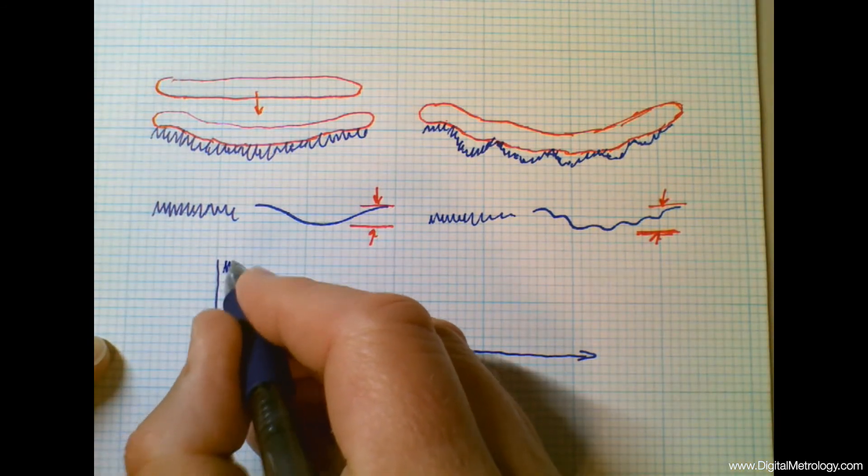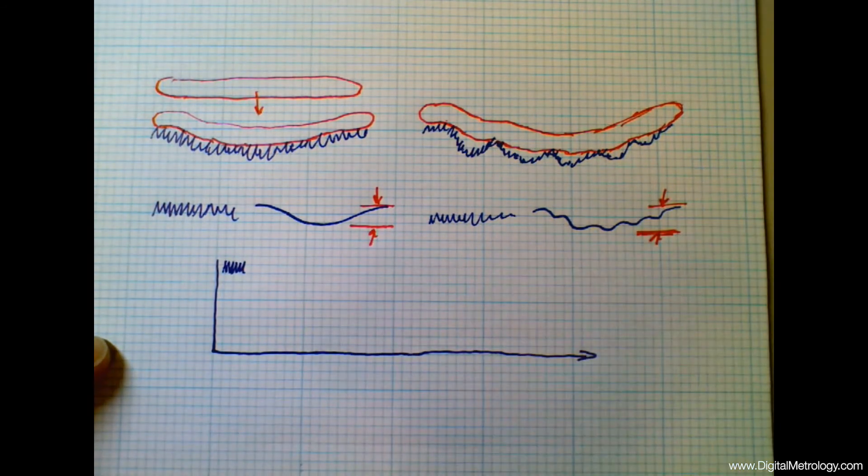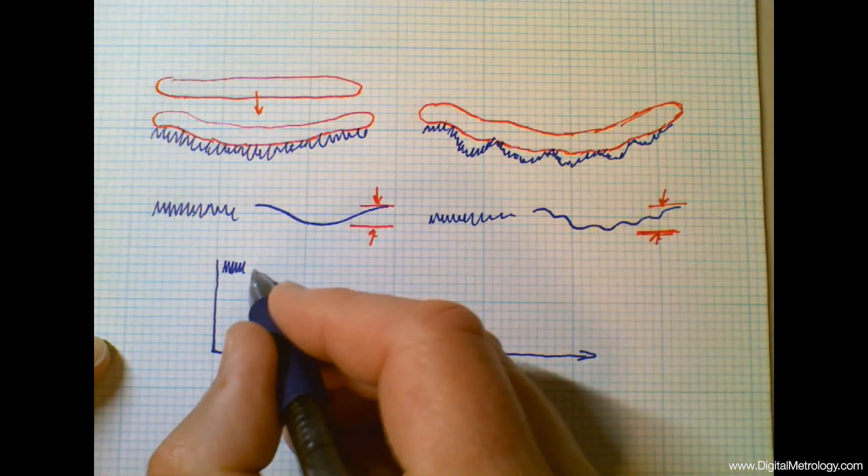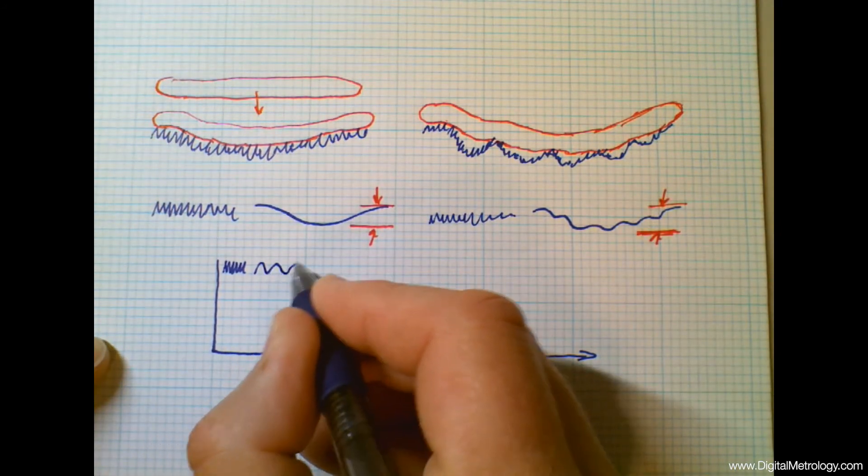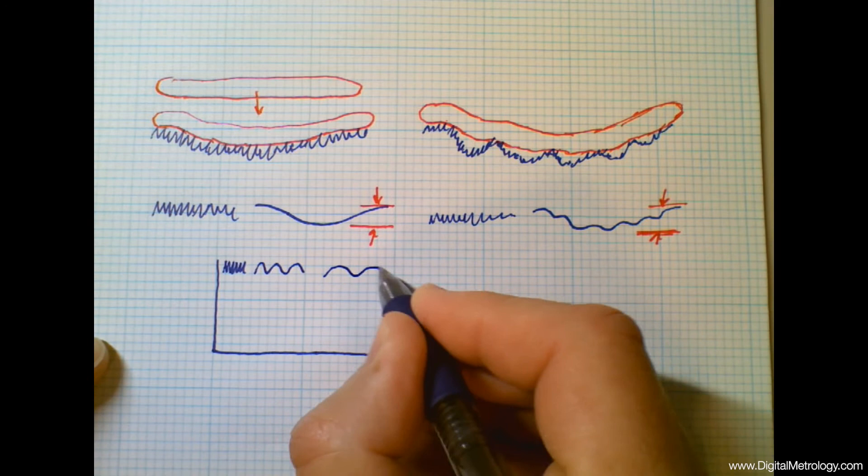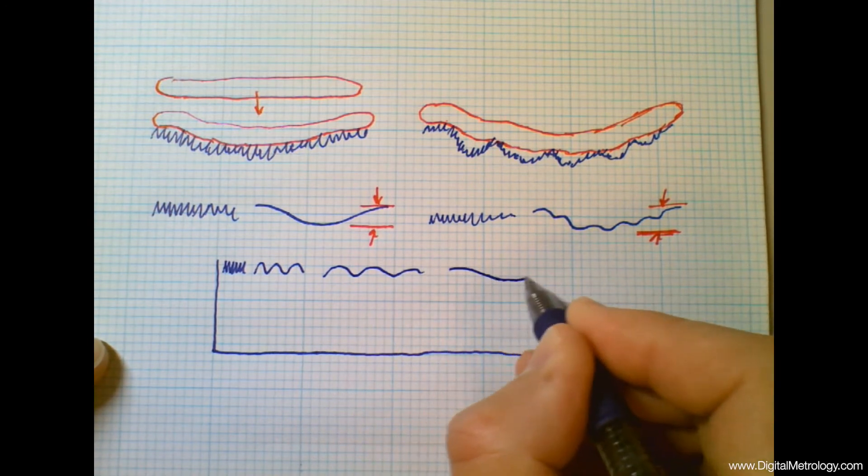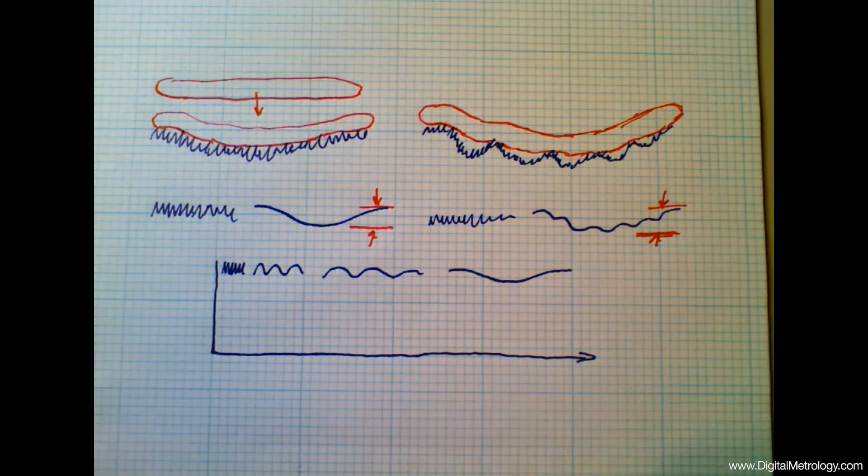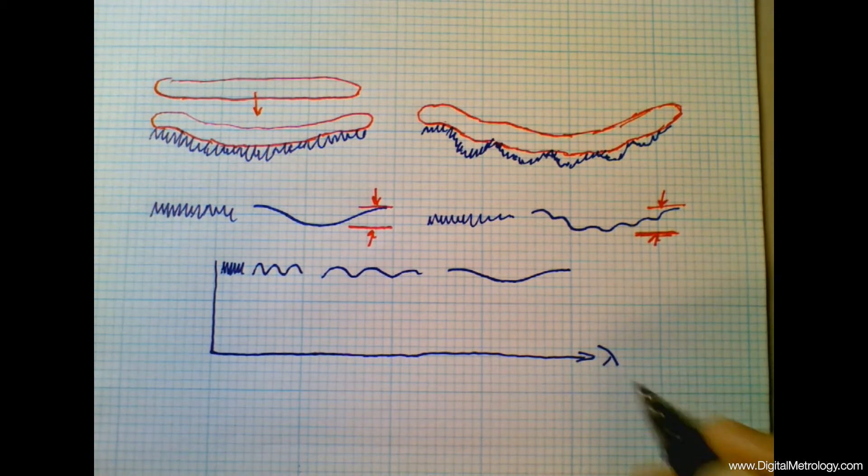So let's draw a spectrum. We have the surface here either left or right that's going to have short wavelengths in it, longer wavelengths, longer wavelengths, and then all the way out to our smile shaped wavelength. So this is a spectrum of wavelengths.